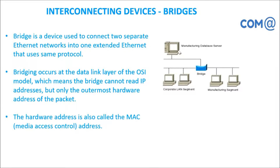Next is bridge. A bridge is a device used for connecting two separate Ethernet networks — it helps connect both Ethernet networks together. Bridging occurs at the data link layer — it works at Layer 2 of the OSI model and helps read data in a better way. The hardware address, called MAC address (media access control), is also read from the data.